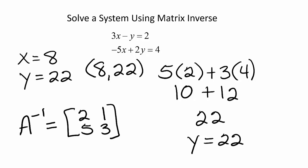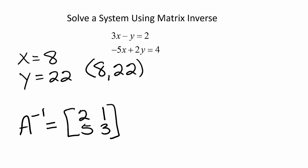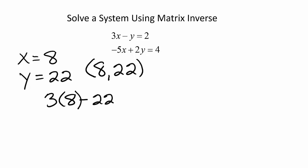Don't forget that it's always a good idea to check your answers. So let's check our answer with the original system. The first equation, we have 3 times 8 minus 22, and that equals 2. That's 24 minus 22 equals 2. So we know that's correct.